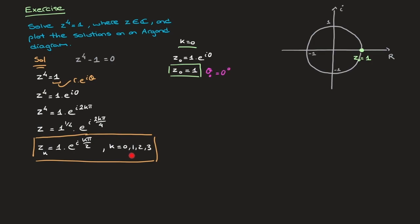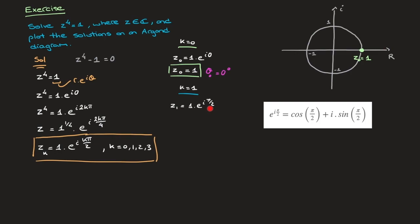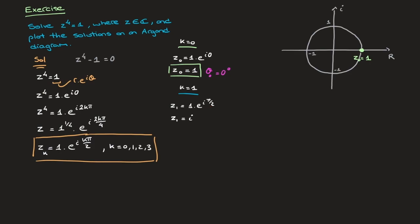When k equals 1, replacing k by 1 gives z sub 1 equals 1 times e to the i·π over 2. Now e to the i·π/2 equals cosine of π/2, which is 0, plus i times sine of π/2, which is i. So z sub 1 equals i. On the Argand diagram, this zero is on the unit circle with argument π/2, which corresponds to the point on the positive imaginary axis. The argument is theta sub 1 equals π/2, or 90 degrees.